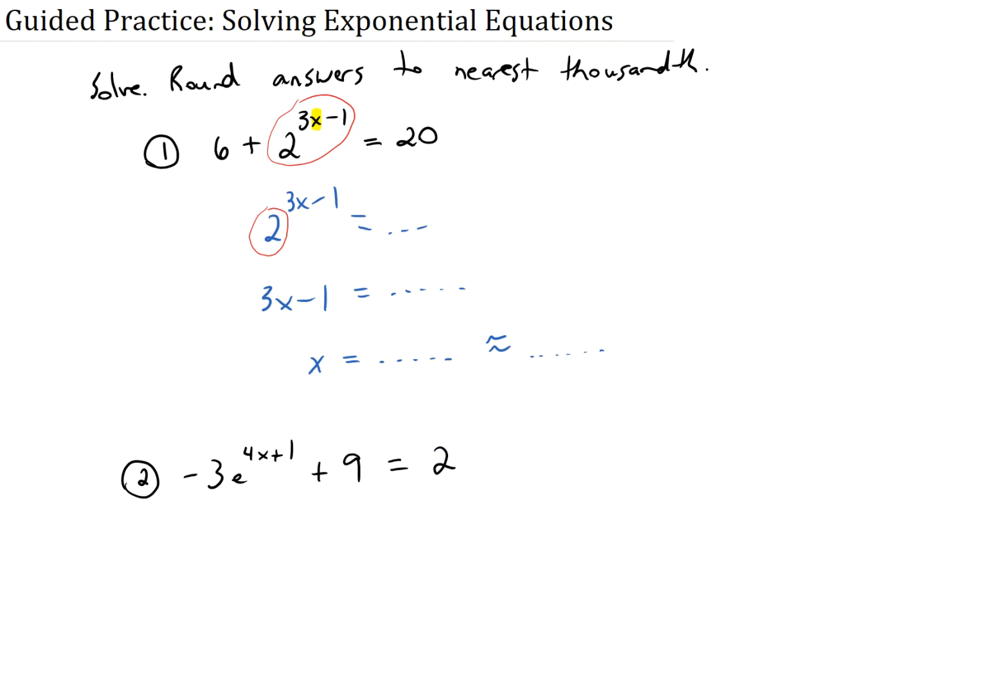Okay? So same principle here, the variable's in the exponent, so you're going to have to work through multiple steps to get through and remove all these things, all this arithmetic around the x. So you've got to strip those pieces away one layer at a time.